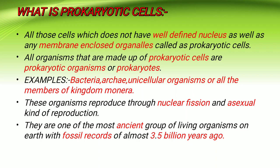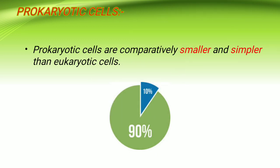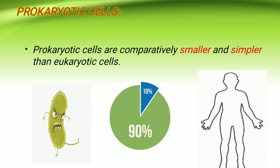Let us know more interesting facts about prokaryotic cells. Prokaryotic cells are comparatively smaller and simpler than eukaryotic cells. Also, 90% of bacterial cells are found in the human body, and in the human body, bacterial cells are found in maximum amount in our digestive system.